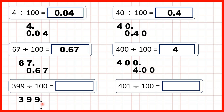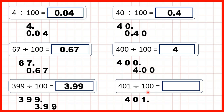Now we have 399 divided by a hundred. We write out the number, copy down the decimal point, and move each digit two squares across. That gives us our answer 3.99.